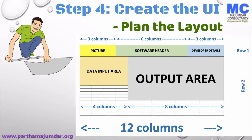On the first row, we will have three sections. On the first section, we will display a picture occupying three columns. Then we will display the software header, which will occupy six columns. And on the extreme right, we will provide the developer details occupying three columns. On the second row, we will have two sections. On the left-hand side section, we will utilize four columns for taking the data input. And on the right-hand side, we will utilize eight columns for displaying the output from our software.